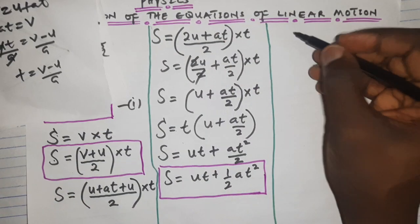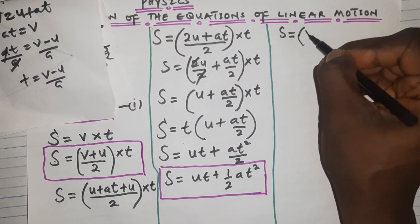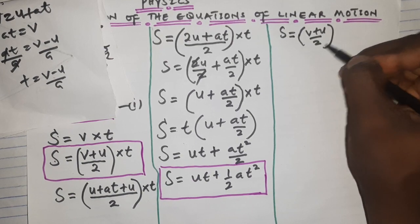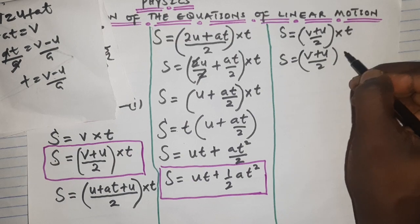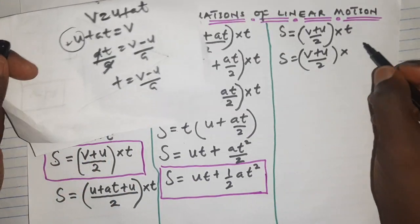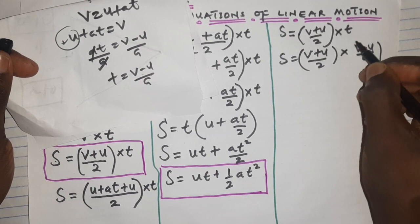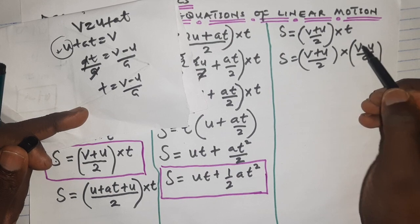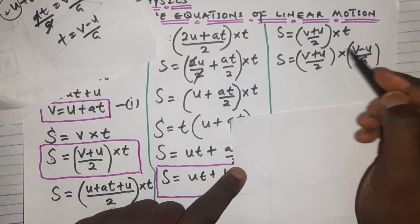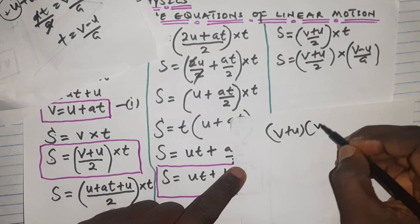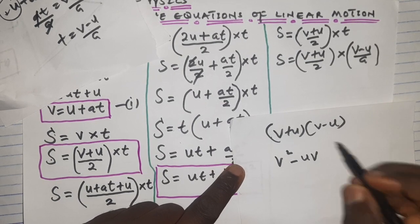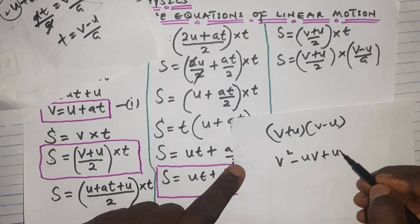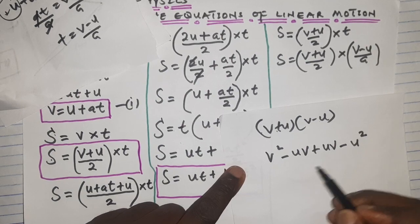Rewriting the distance equation: s = (v + u) / 2 × (v − u) / a. Multiplying the numerators together gives (v + u)(v − u), and multiplying the denominators gives 2a.